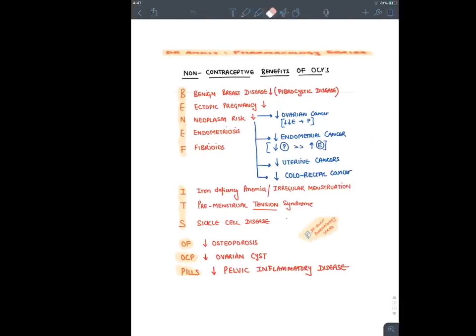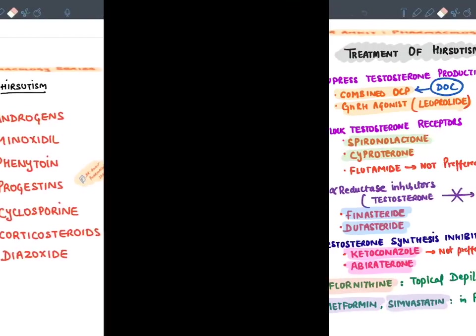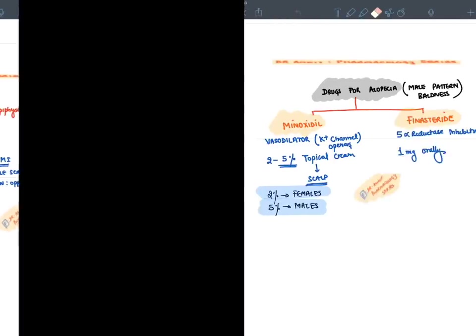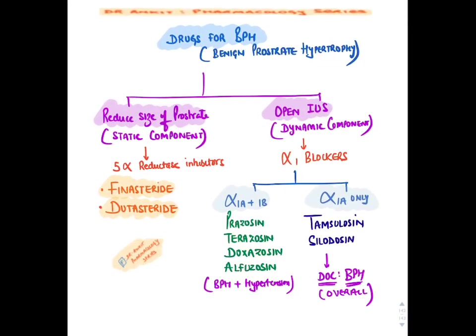BPH is an aging process — with age, the prostate gland enlarges. Since the prostate is below the bladder neck, the neck becomes constricted and the patient finds it difficult to pass urine because the internal urethric sphincter (IUS) becomes blocked. Treatment has two goals: first, reduce the size of the prostate (static component) using 5-alpha reductase inhibitors — finasteride and dutasteride — which inhibit conversion of testosterone into its active form dihydrotestosterone.